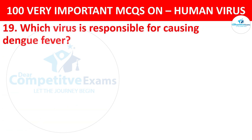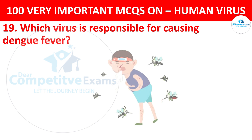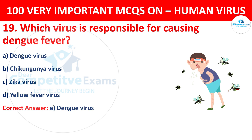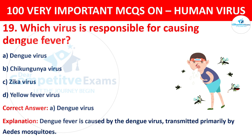Question 19. Which virus is responsible for causing Dengue Fever? Your options are Dengue virus, Chikungunya virus, Zika virus, or Yellow Fever virus. The correct answer is A, that is Dengue virus. Dengue fever is caused by the Dengue virus, transmitted primarily by Aedes mosquitoes.